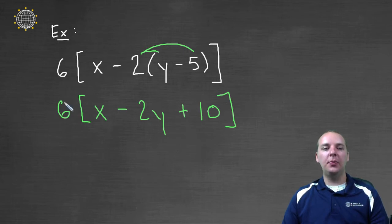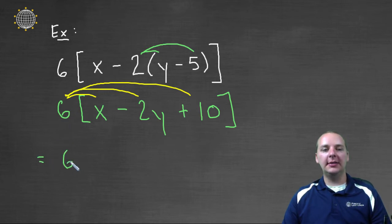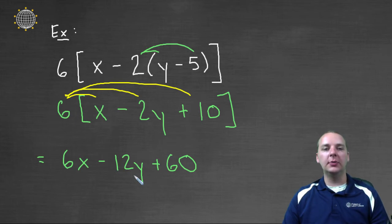Alright, so the last step will be to take care of this distributive property, where we multiply the six times the x, the two y, and the ten. Okay, six times x is six x. The six times negative two y would be minus twelve y, and the six times ten would be sixty. Look for any like terms, I don't think there are any, so I think we're done with this one.